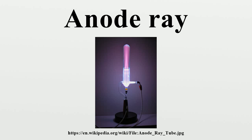In 1907, a study of how this ray was deflected in a magnetic field revealed that the particles making up the ray were not all the same mass. The lightest ones, formed when there was some hydrogen gas in the tube, were calculated to be about 1840 times as massive as an electron. They were protons.